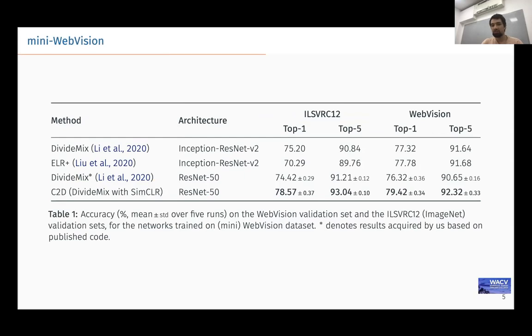As for results here, you can see results on web-crawled mini-WebVision data, compared with state-of-the-art. C2D improves over existing approaches by 2-3% top-1 accuracy while using smaller network.